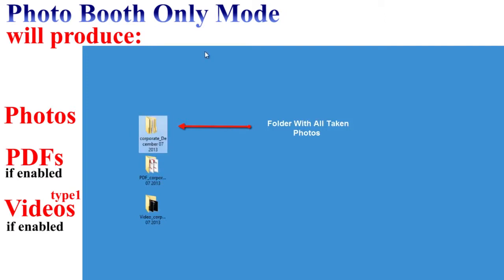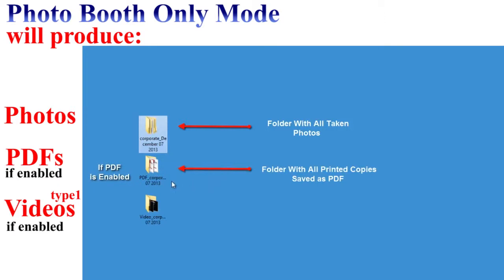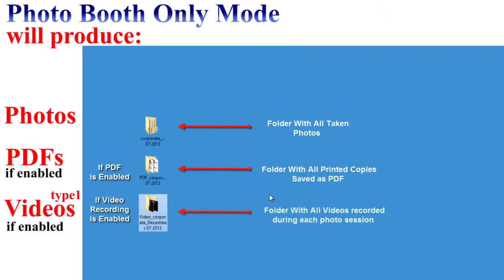With photo booth only mode, PT Booth A1 Plus will produce the following: a folder with all of the taken photos, printed copies saved in a PDF file if you have enabled that function, and a folder with all of the video recorded during each photo session.